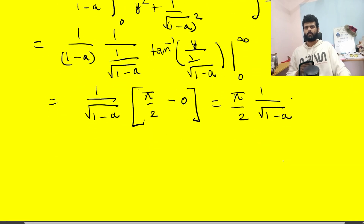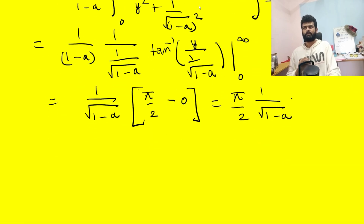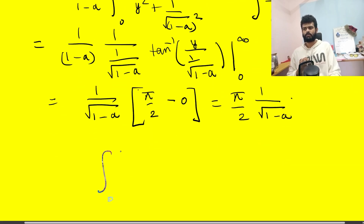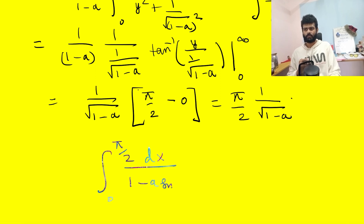So we have proved: the integral from 0 to π/2 of dx divided by (1 − a sin²x) equals π/2 times 1 over √(1−a).